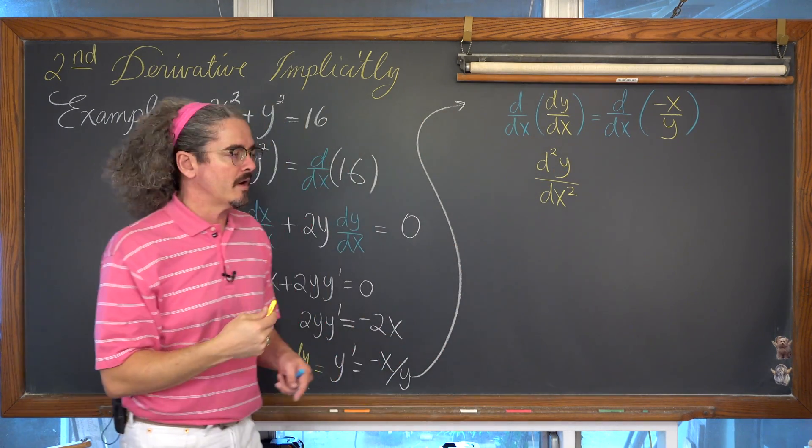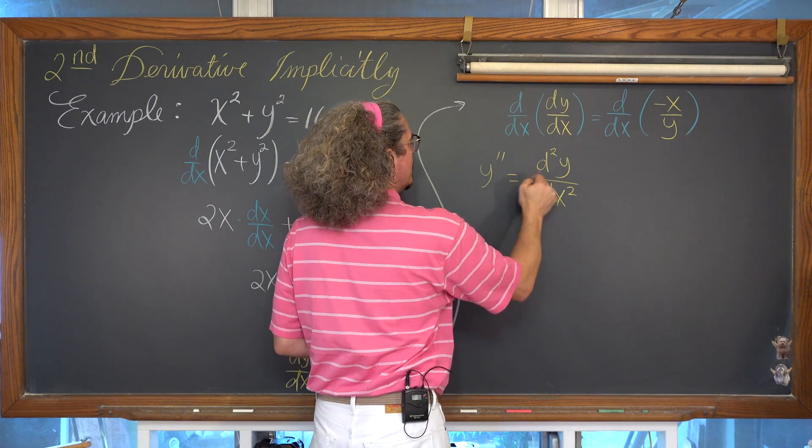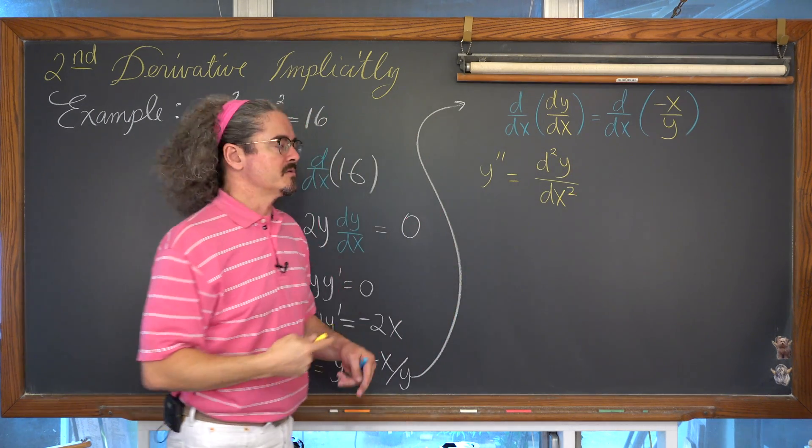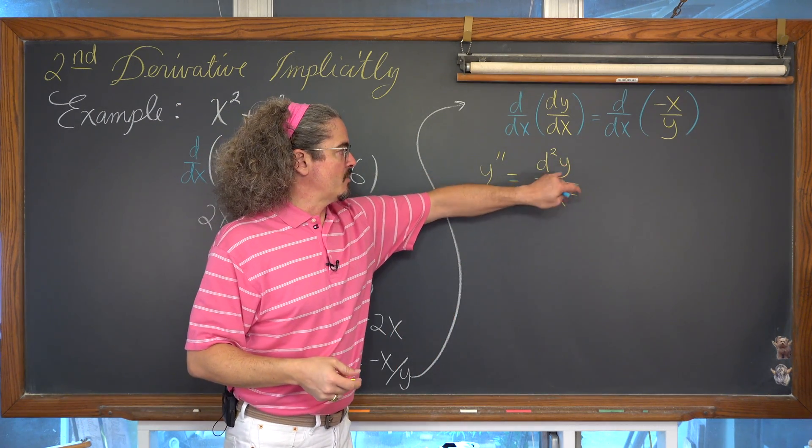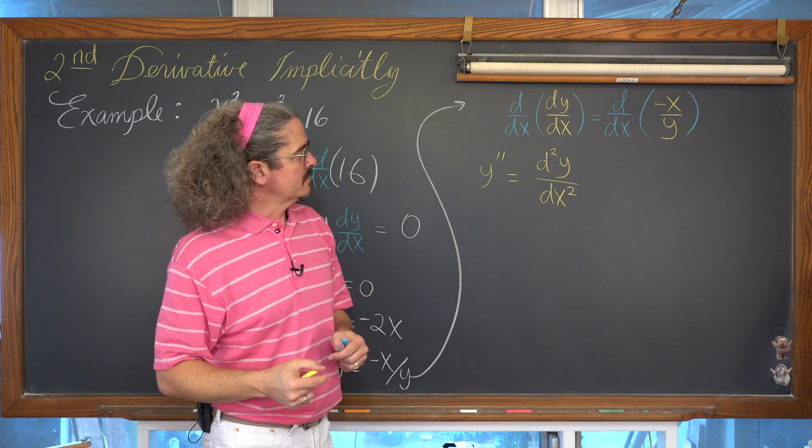So there is how you write, if you will, y double prime in that expanded notation: d squared y over dx squared.